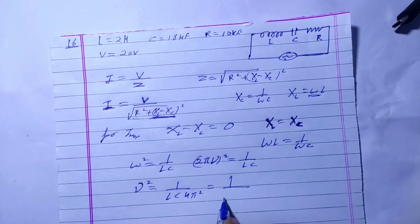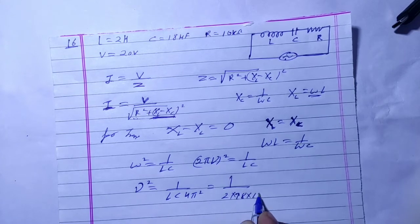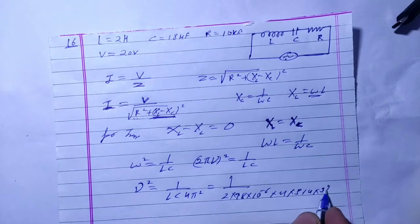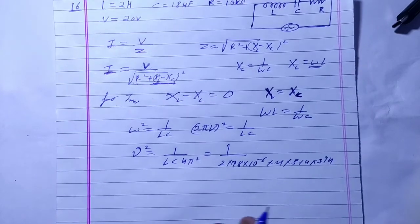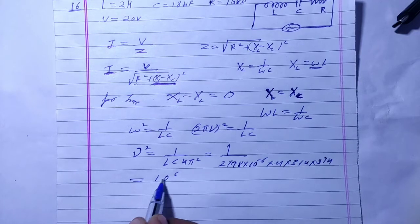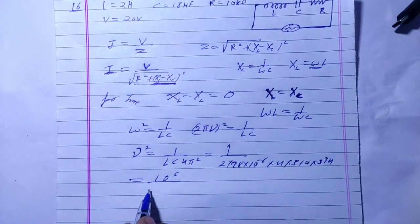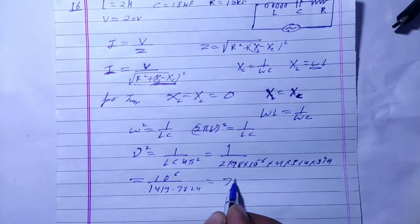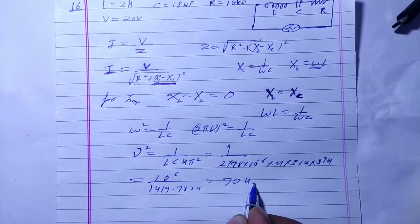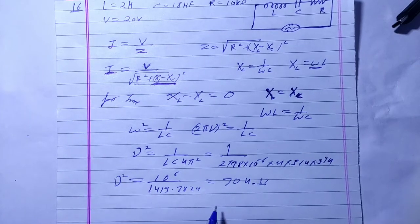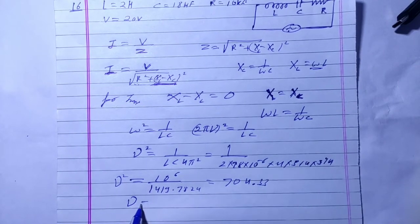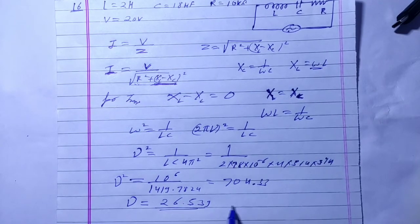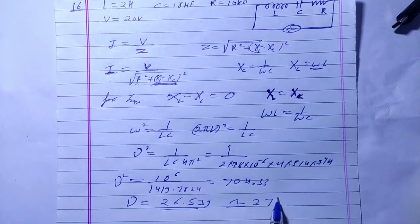Putting in the values: L is 2 henry, C is 18 into 10 to the power minus 6, and 4π² is 4 into (3.14)². Solving, we get 10 to the power 6 in the numerator. This gives ν² equal to 704.33. Taking the square root, frequency ν equals 26.539 Hz, which we approximate to 27 hertz.